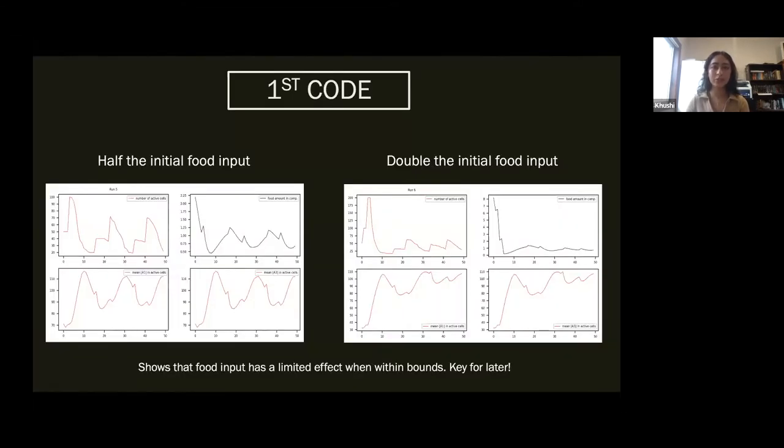Operating in Python, we established a base code with a simple output and ran this to understand the effect of the factors one by one and in pairs on how a steady state system would react. Here, we can see variation of food input when halved or doubled has limited impact on a population. This is key for later.